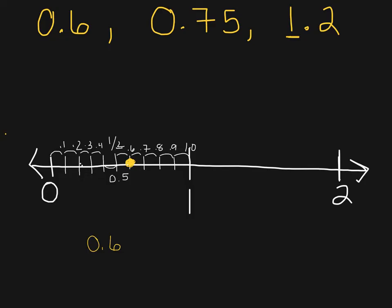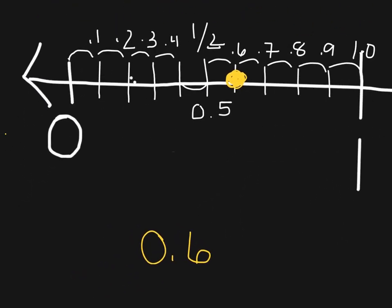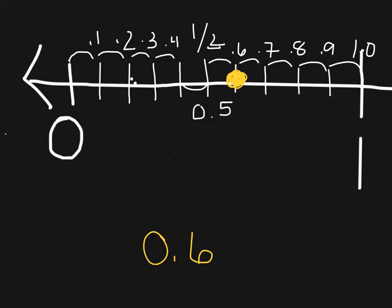Let's do seventy-five hundredths. When we say seventy-five hundredths, that means we should be placing this number between zero and one and cutting that space into one hundred little pieces. However, that's a lot of work. We've already cut up our spaces into tenths, which is fine because seventy-five hundredths has a seven in the tenths place. So we're going to be working between seven tenths and eight tenths. We have a five in the hundredths place, which tells us it's going to be halfway between seven tenths and eight tenths.